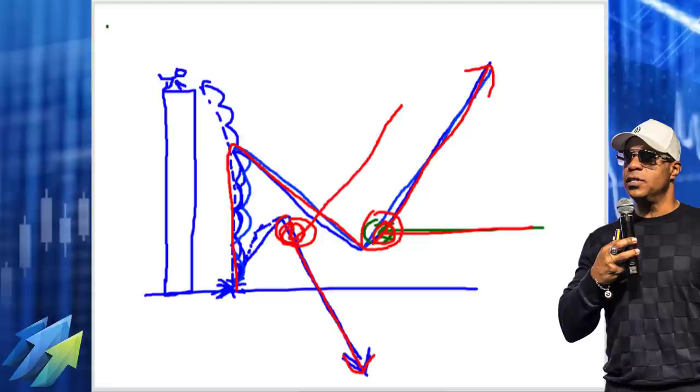Now someone was asking, Oliver would the speed of the descent indicate if it's a continuation or reversal? That's a very, very good question, a very advanced question actually. Is the velocity of the drop or the climb significant? Yes it is and we'll get to that. So why don't I do this, I'm going to clear this out, let me go to some charts, give me just a moment here.